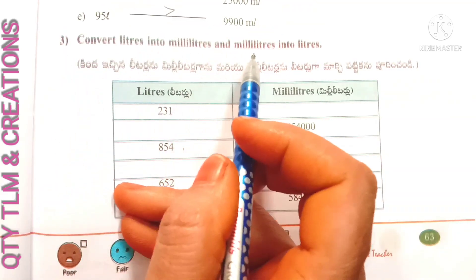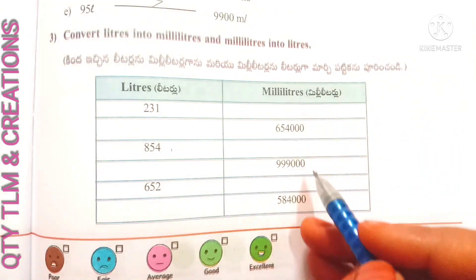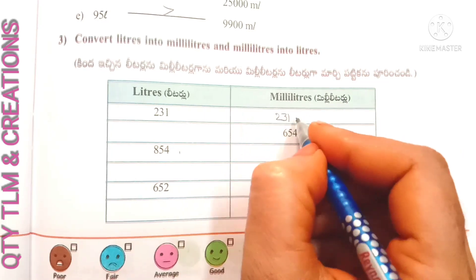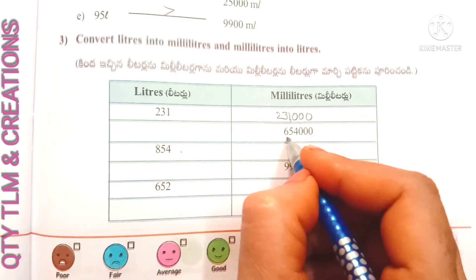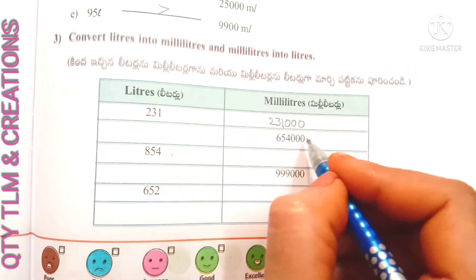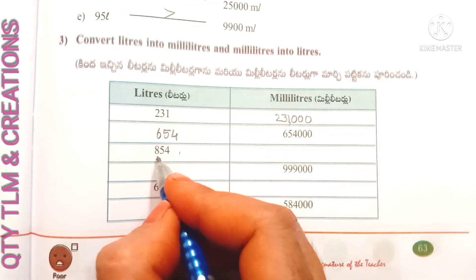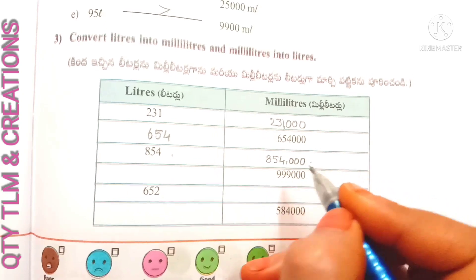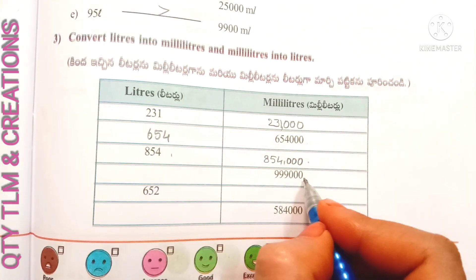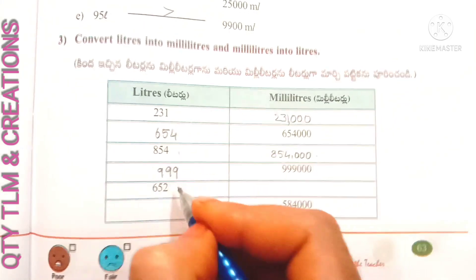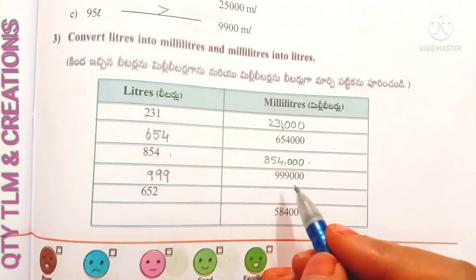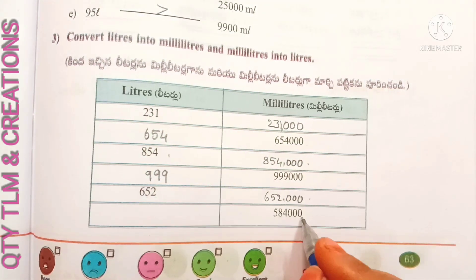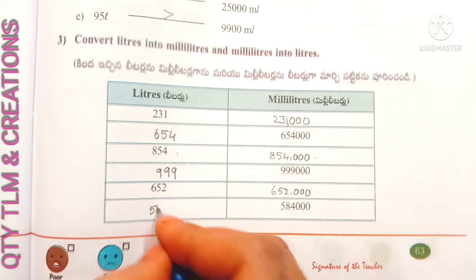Next question: convert liters into milliliters and milliliters into liters. 231 liters multiplied by 1000 equals 231,000 milliliters. 654,000 milliliters converted equals 654,000 milliliters. 854 liters converted into milliliters equals 854,000 milliliters. 999,000 milliliters converted into liters equals 999 liters. 652 liters converted into milliliters, and 584,000 milliliters converted into liters gives 584 liters.